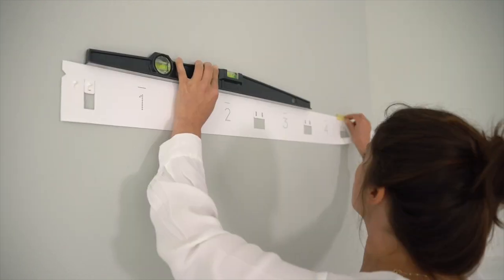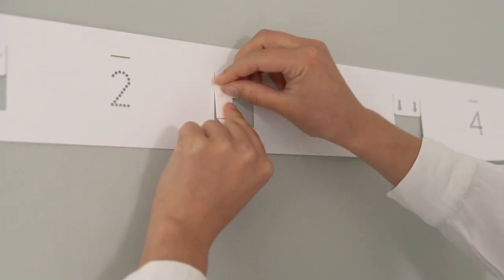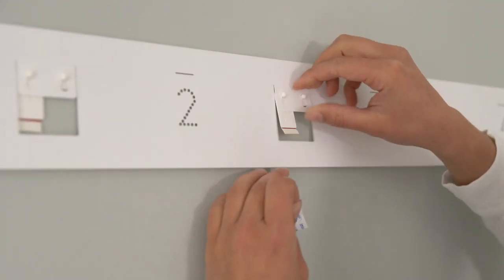On the right, adjust the hanging tool to a level position and secure it with tape. Fill the hanging tool with the additionally needed monos and stick them to the wall.